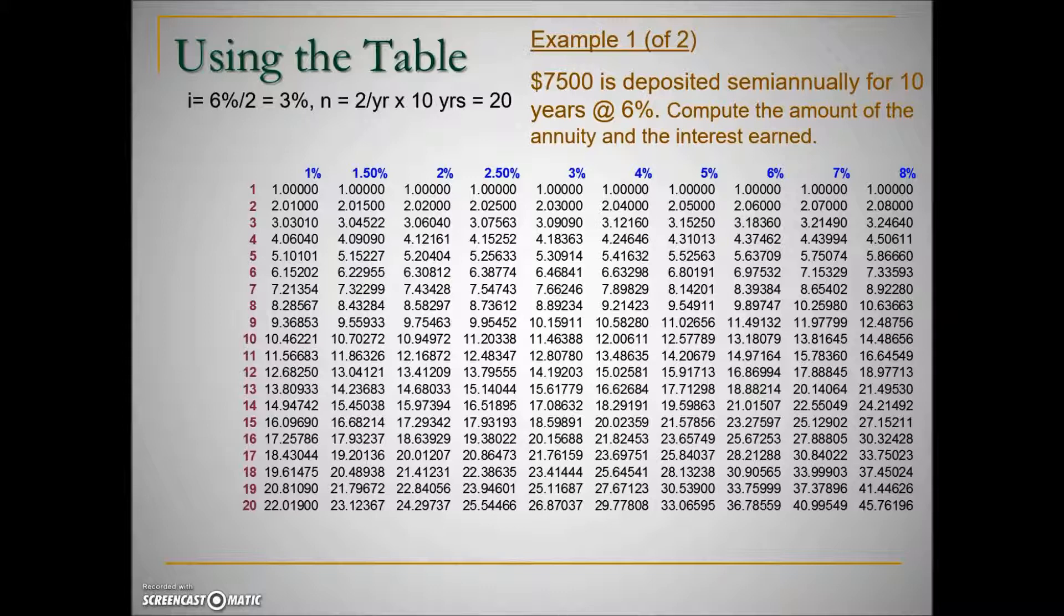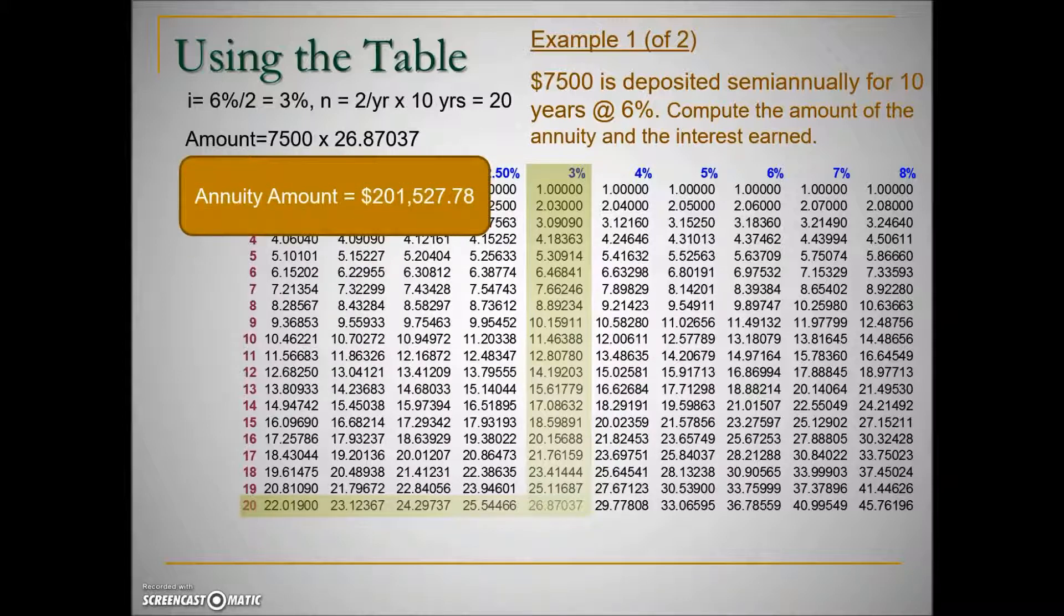We will look where that i value and that n value correspond. This will be the value then that we will take from the table and multiply the regular deposit. So $7,500 times 26.87037 will result in the final value or the future value of this annuity after 10 years.